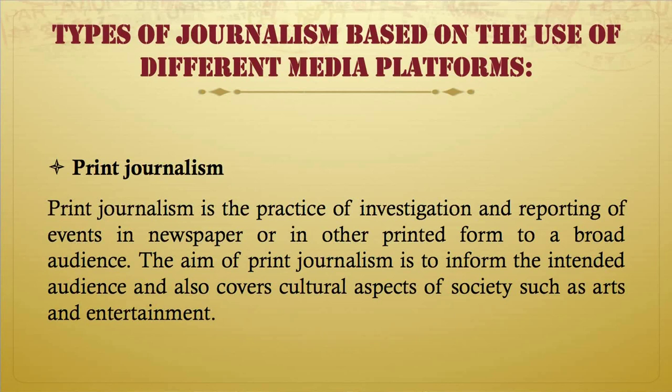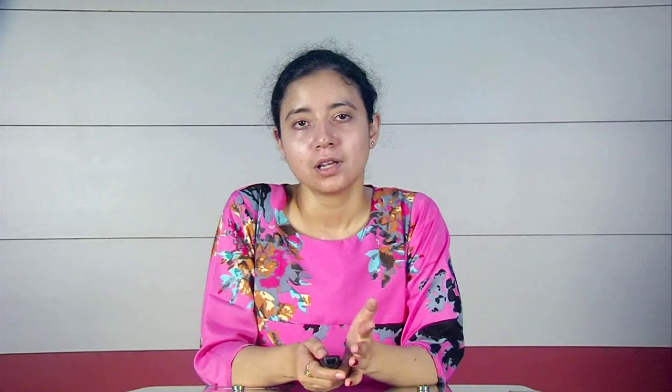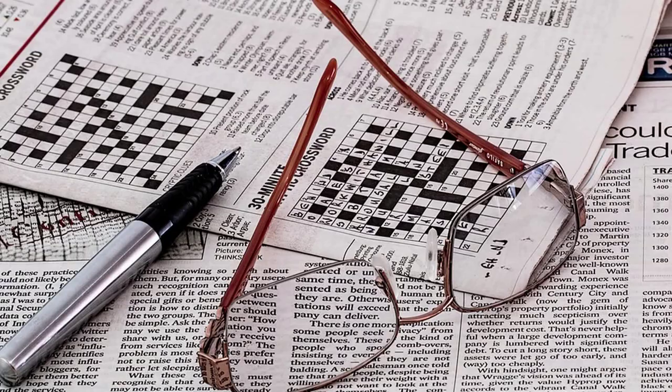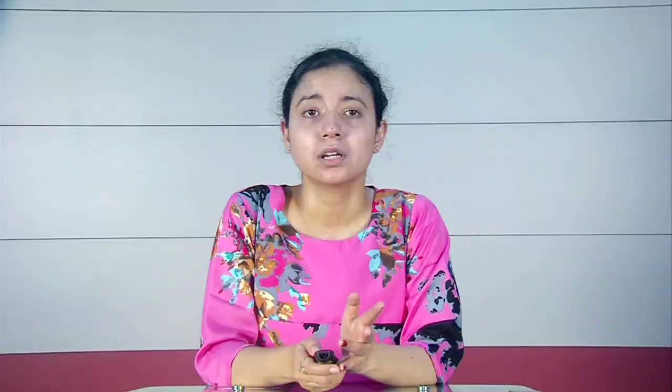The first type of journalism based on media platforms is print journalism. Print journalism is the practice of investigation and reporting on events in newspapers or other printed forms to a broad audience. It covers different forms of news stories, editorials, letters to the editor, hard-based stories, soft news stories, and anchor stories. The aim of print journalism is to inform the audience and also to cover cultural aspects of society.